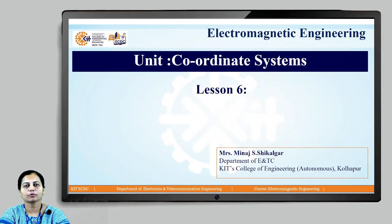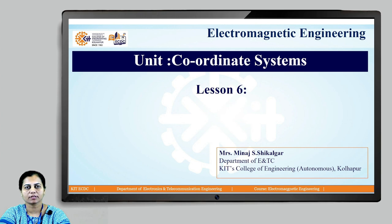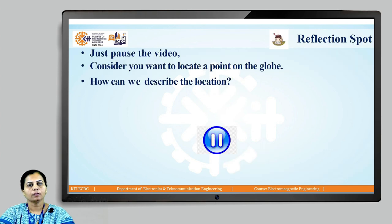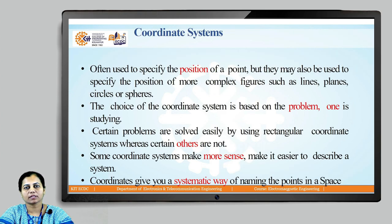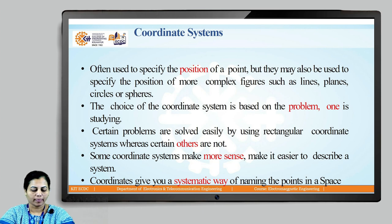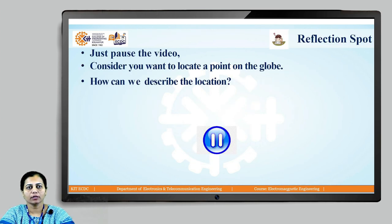Hello students, welcome to the course Electromagnetic Engineering. So far we have discussed two types of coordinate systems: the Cartesian coordinate system as well as the cylindrical coordinate system. Today we will be discussing the spherical coordinate system. Coordinate systems are required to specify the position of a point. Consider you want to locate a point on the globe — how can we describe that location?